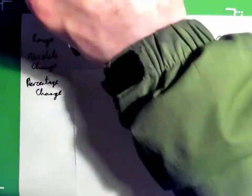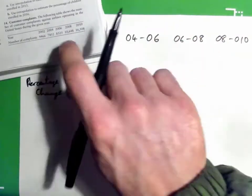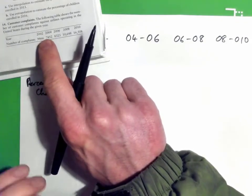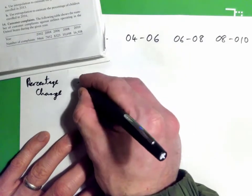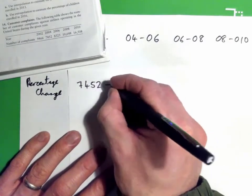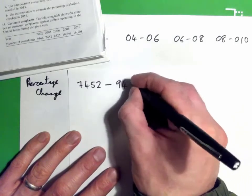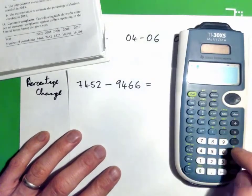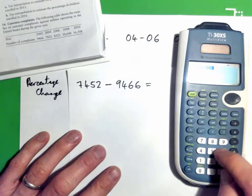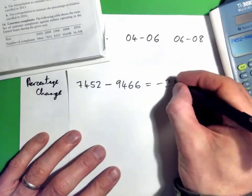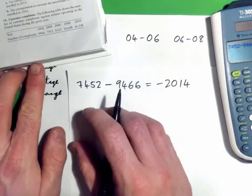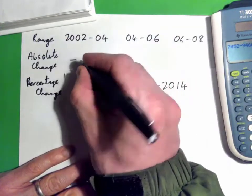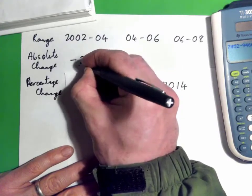From 2002 to 2004 it was 9,466 to 7,452. You take 7,452 and subtract the first number, 9,466, and you get negative 2,014. So that's the absolute change — from 2002 to 2004 the complaints dropped by 2,014.